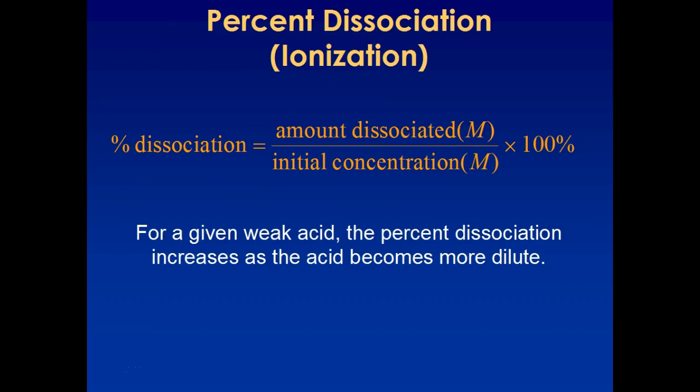Percent dissociation wasn't something I spent a whole lot of time on in class when I first talked about it, but it's basically just your 5% rule. It's taking what your X is, the amount that dissociated, over that initial concentration and multiplying it by 100. If you are a more dilute acid, typically that percent dissociation value increases.